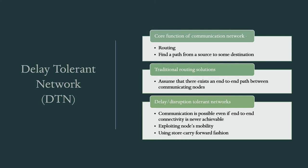In Delay or Disruption Tolerant Networks, DTNs, communication is possible even if end-to-end connectivity is never achievable, meaning there is no direct path from source to destination. This is done by exploiting node mobility. The nodes in this sort of network are usually moving, and they follow a technique called store-carry-forward. Using this technique they can forward messages from a source to destination even if there is no end-to-end connectivity.